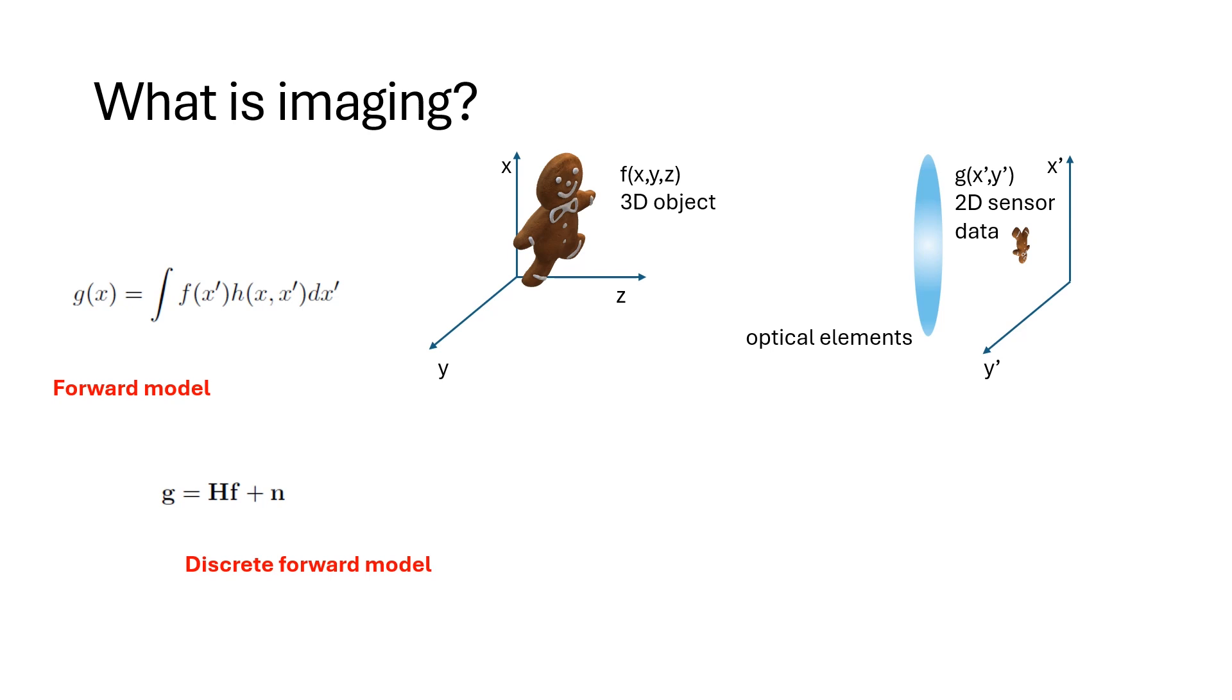So the process of imaging, first of all, is to understand and create this kind of forward model describing the relationship between the object values and the measurement values. But then the process of imaging is to invert this to take the measurement values and estimate the image. So computational imaging consists of estimation of F given G, which is what we'll call the inverse problem. Okay, so that's what imaging is.